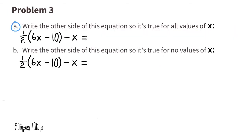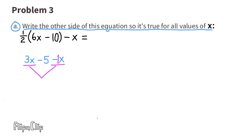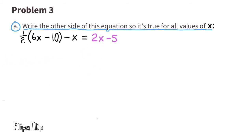Problem number 3A: Write the other side of this equation so that it's true for all values of X. Use the distributive property: 1 half times 6X is 3X, and 1 half times negative 10 is negative 5. Bring down the negative X and collect like terms: 3X minus 1X is 2X. The equation reads 2X minus 5, so the other side could be 2X minus 5.